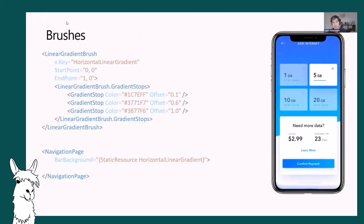Looking at some Xamarin Forms 5 features: Brushes enable gradient brushes and strokes applied to anything - creating a linear gradient brush applied to the entire page with multiple color stops. Gradients work on buttons, backgrounds, and foregrounds. Both linear and non-linear brushes are available.